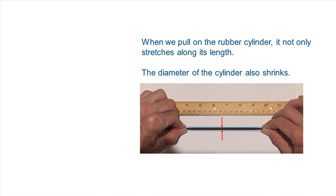When we pull on the rubber cylinder, it not only stretches along its length. The diameter of the cylinder also decreases.